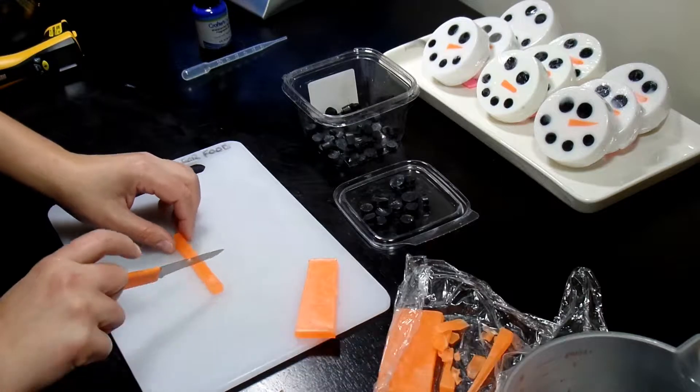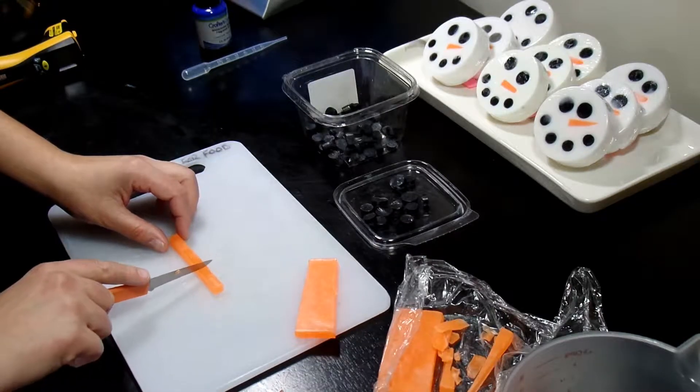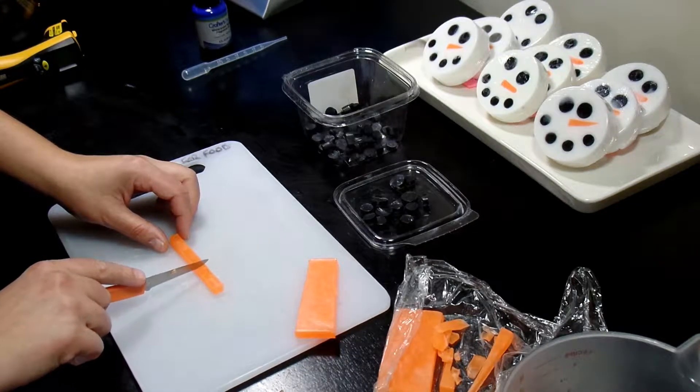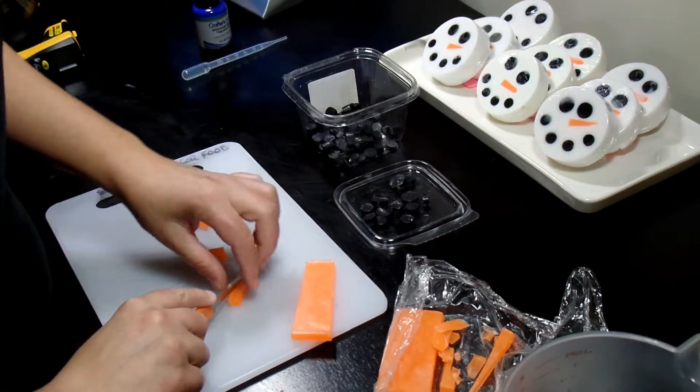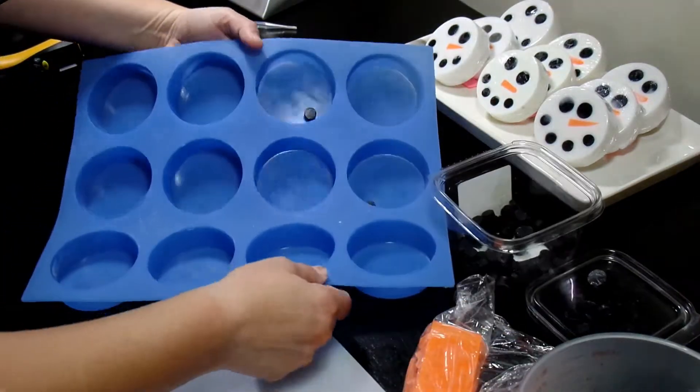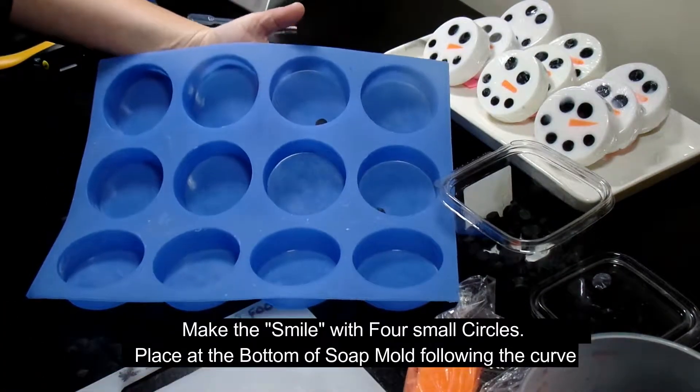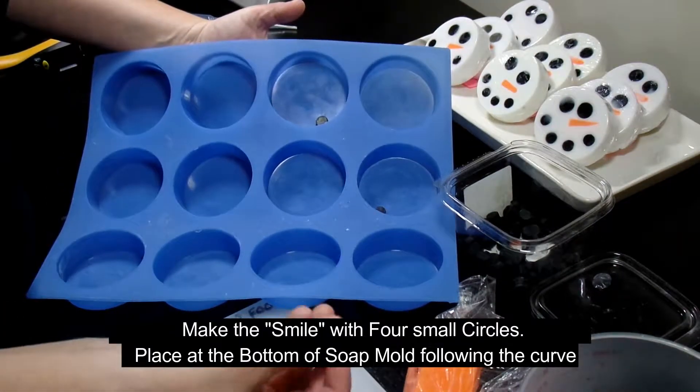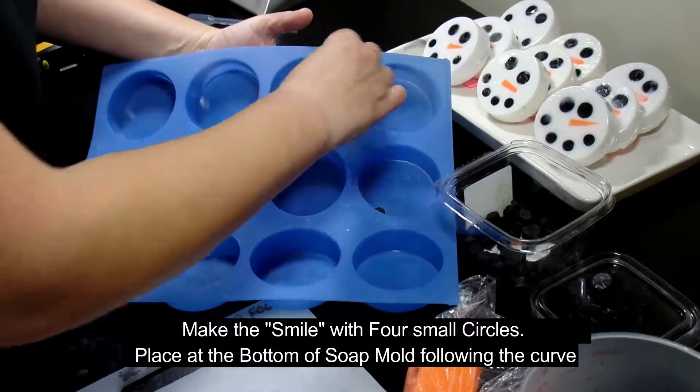Basically now what we're going to do is we're going to take and cut a sliver off. What I'm going to do is I'm going to eyeball, I think I want to make my noses about that big, so I have two triangles. I'm just going to hold this up like this just so you can see what I'm doing.